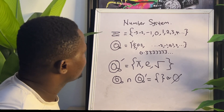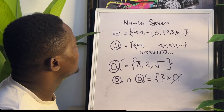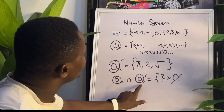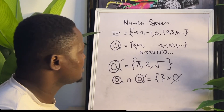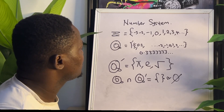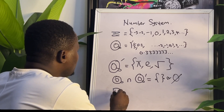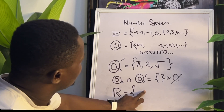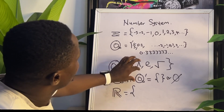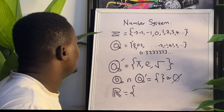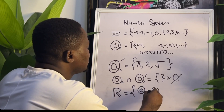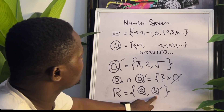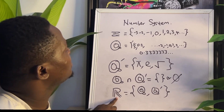Apart from these number systems, let us consider a bigger number system that contains both rational and irrational. There is a number system that contains both inside it — that is called the real number system. The real number system has all the rational number system inside, and at the same time it also has the irrational number system. So the real number system is made up of both the rational and the irrational number systems together.